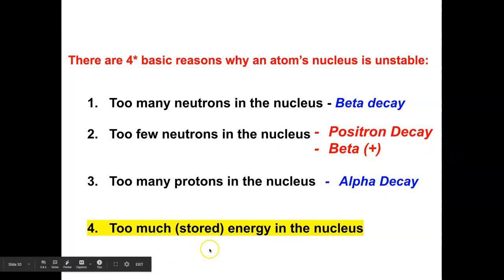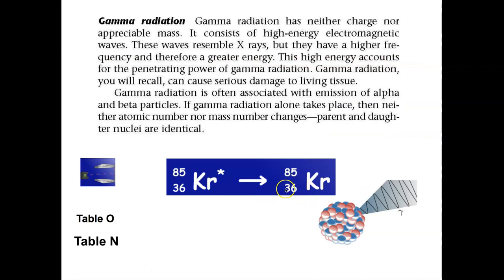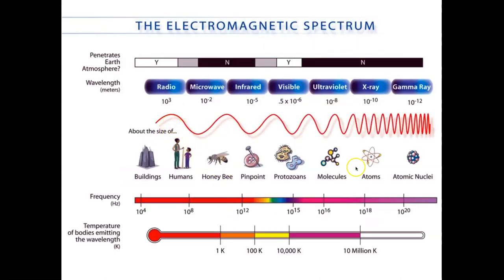The fourth way a nucleus can be unstable is too much stored energy. This usually releases gamma radiation. Gamma radiation is just electromagnetic radiation — it doesn't change the mass or the atomic number. You go from a higher energy to a lower energy state. This could occur because the atom was bombarded. Gamma radiation has incredibly small wavelengths and incredibly high frequency, and since energy equals frequency times Planck's constant, gamma radiation has incredible high energy. You do not want to be around it in large amounts.